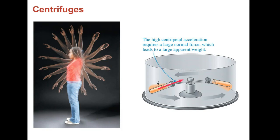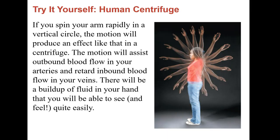There are things called centrifuges, and you can simulate this by waving your arm in a vertical circle. Some medicines — and when they do blood tests — they spin the sample around and the centripetal force pushes inward, lifting the object. The heavier material goes to the outside because their inertia wants them to go outward. You can actually do this on yourself to see what it feels like.